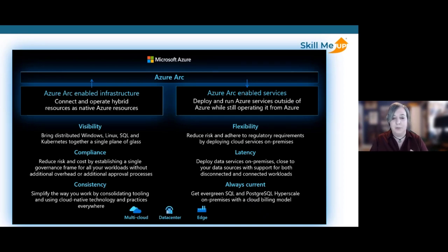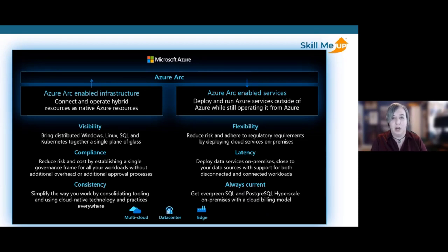Azure Arc helps you adopt cloud practices on-premises. You can deploy applications using a consistent approach with familiar tools and practices across Kubernetes clusters and any infrastructure, standardize change control with declarative configuration management, adopt DevOps techniques such as infrastructure as code, and empower developers with self-service and a selection of tools. With Azure Arc enabled services, you have flexibility to deploy fully managed Azure services anywhere — data services can be deployed and managed from on-premises or a specific region, reducing latency. As new features are brought into Azure, there's an Azure Arc component you can plug into your on-premises environment for extra flexibility.